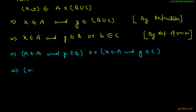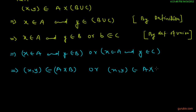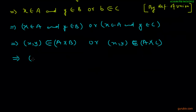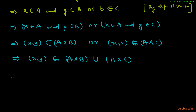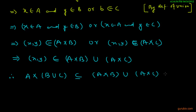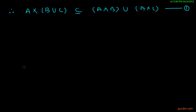This implies that (x, y) belongs to A cross B, or (x, y) belongs to A cross C. This implies (x, y) belongs to (A cross B) union (A cross C). Therefore A cross (B union C) is a subset of (A cross B) union (A cross C). Let this be equation number 1.